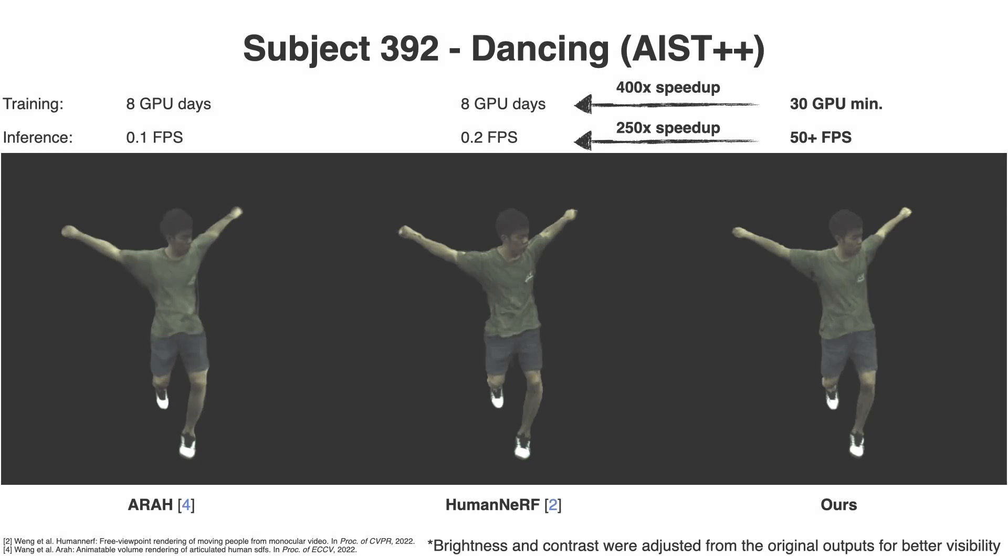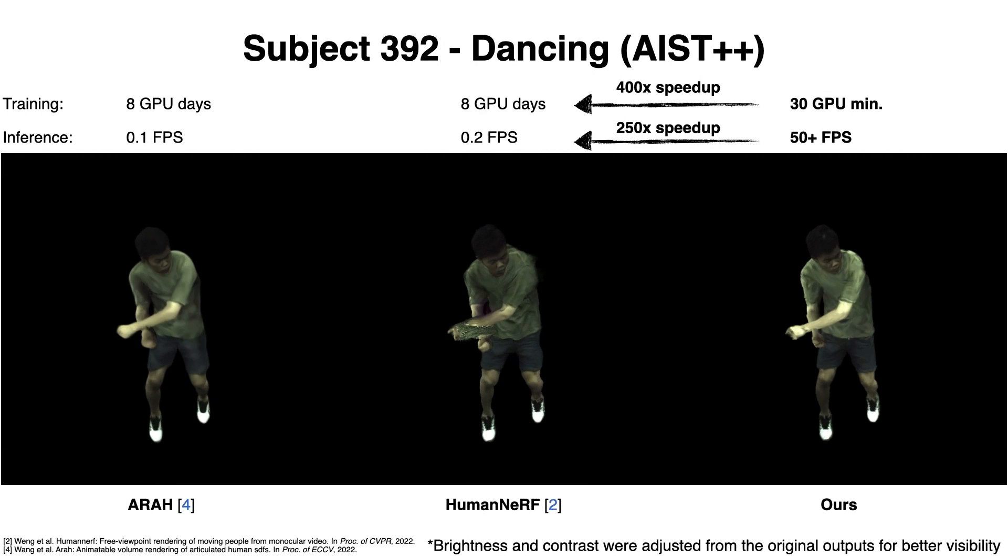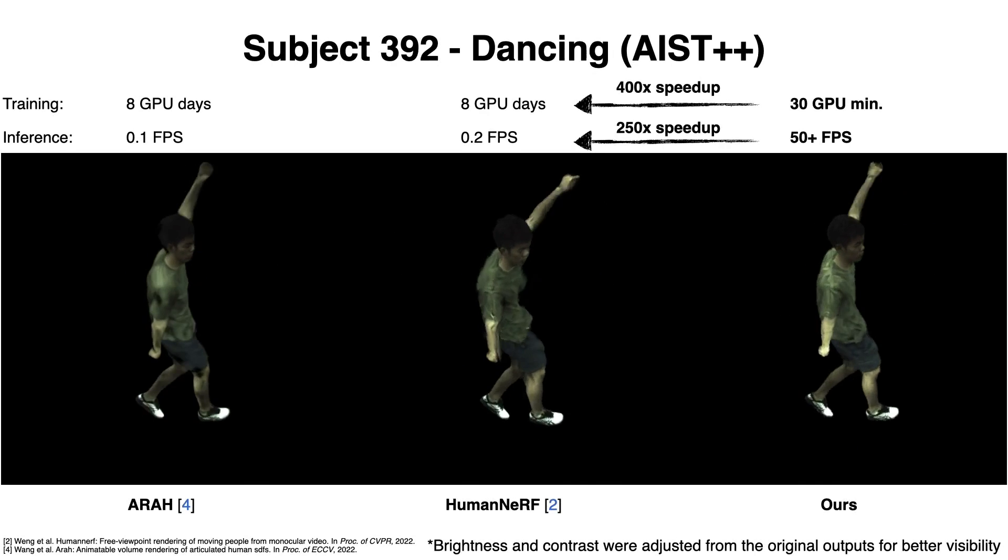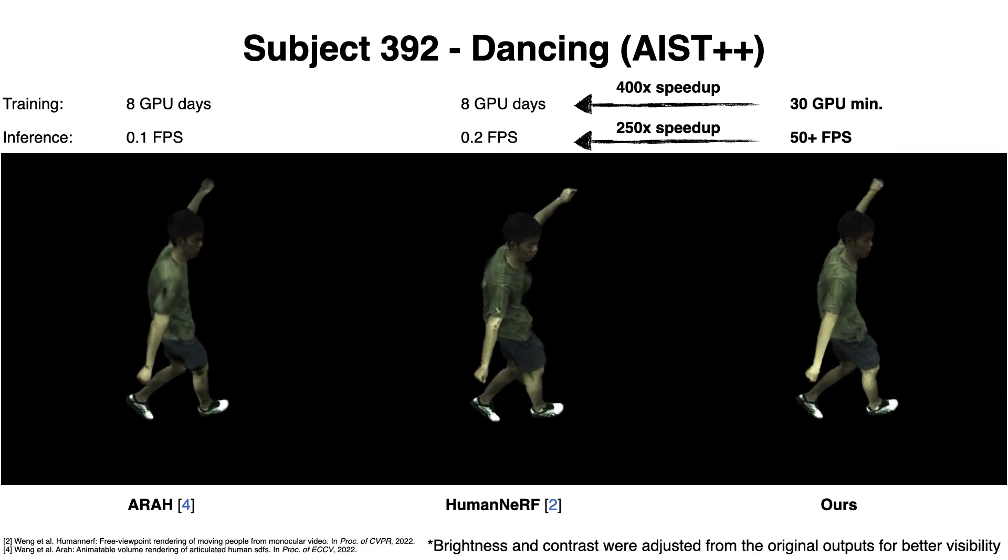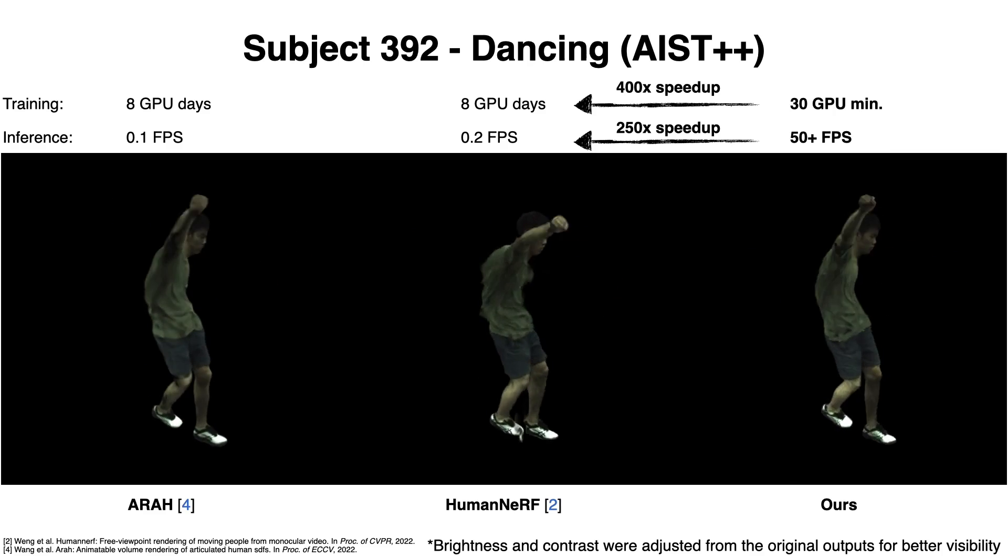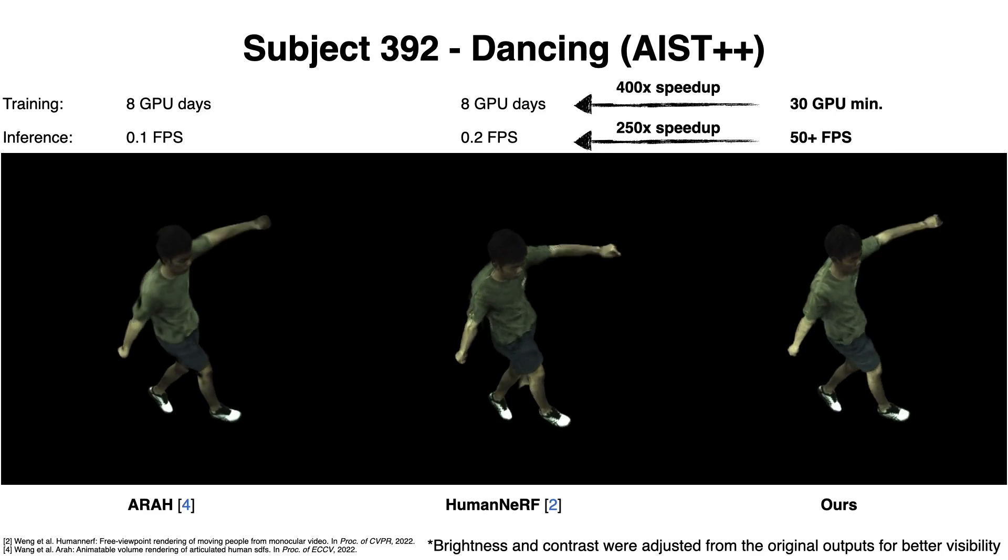Now we show results on out-of-distribution poses, which are drastically different from training poses. From the results, we observe that Human NeRF fails to synthesize high-quality rendering on unseen poses and produces noisy results, especially when the arms are close to each other, due to a lack of constraint on their deformation field.